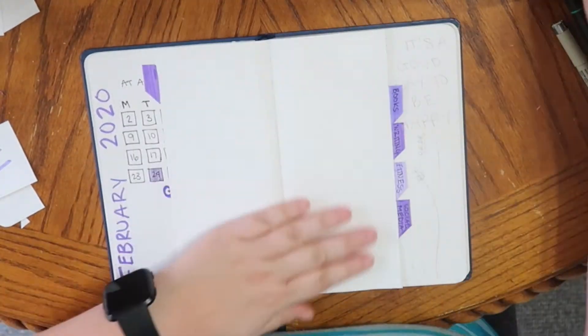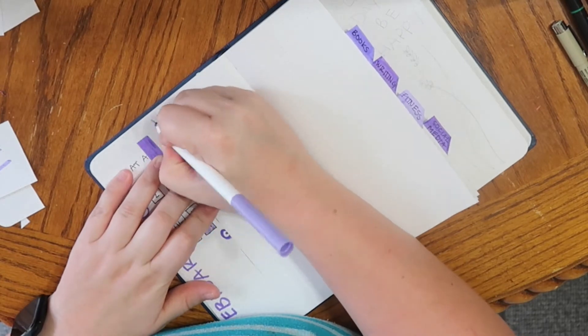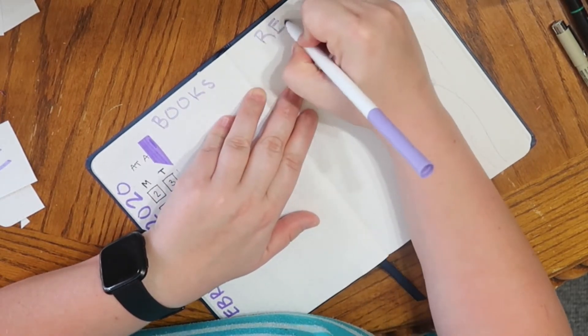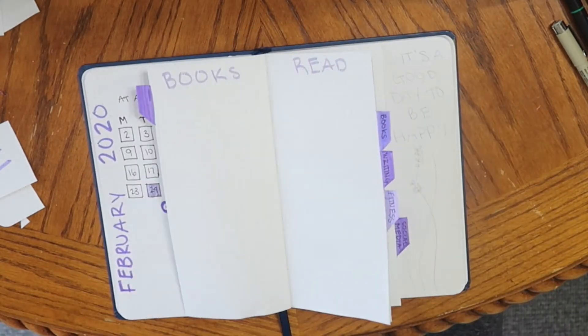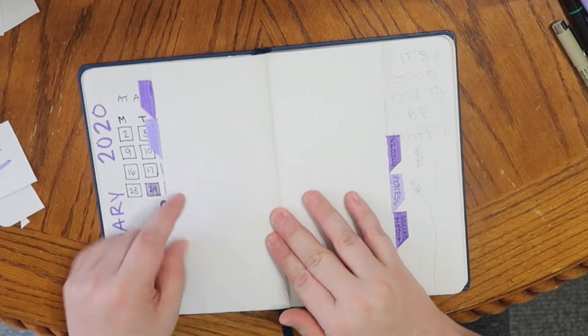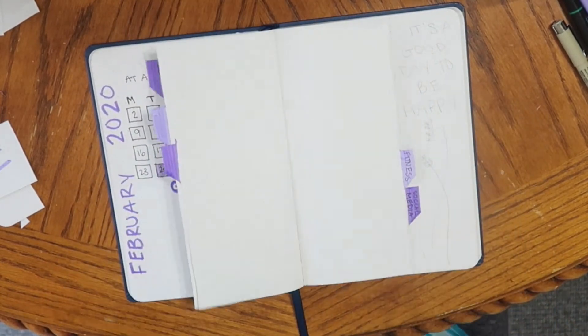I also do need to apologize because the first page of my Dutch doors that was my habits or it is my habits page. It did not record for some reason. So you'll see it in the flip through at the end, but for whatever reason, it did not record me actually doing it. So the first page is habits.